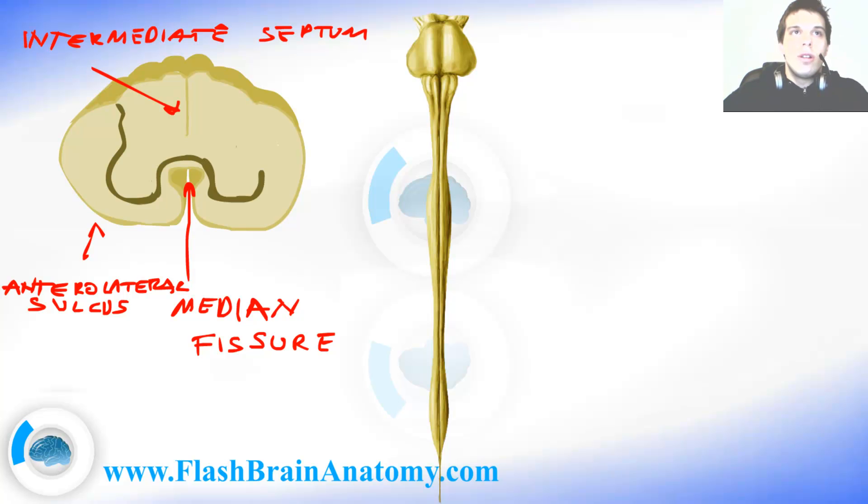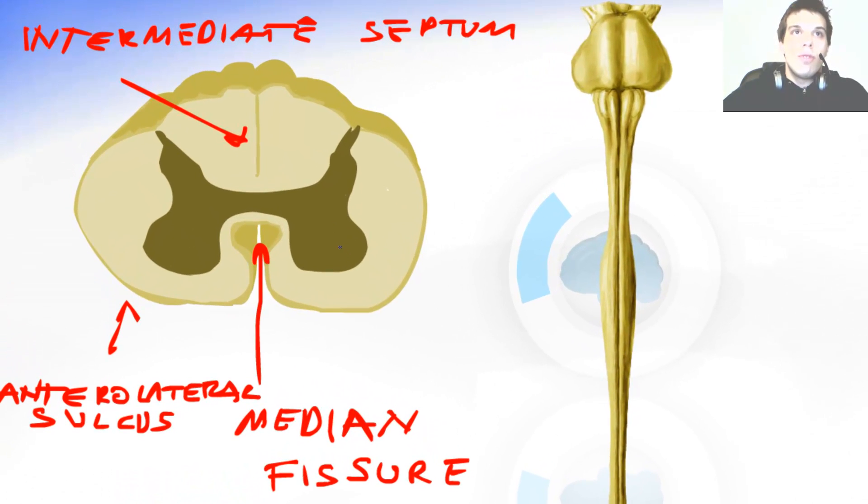Now I drew further the gray matter. The gray matter is the place where neurons, the bodies of the neurons are.